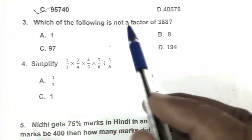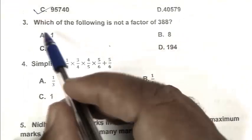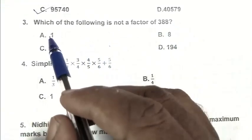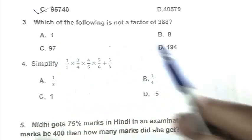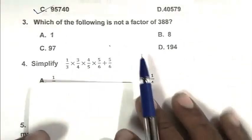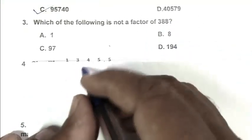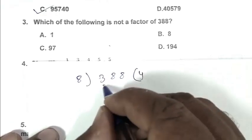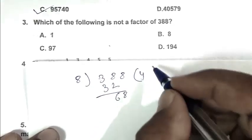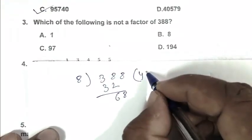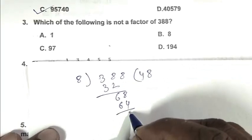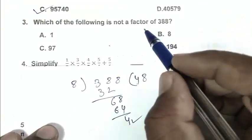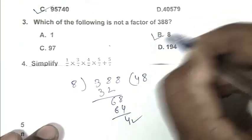Question number 3: Which of the following is not a factor of 388? So friend, first we take option A, that is 1. One is a factor of every number, so it is not the right answer. We take B, that is 8. We divide 388 by 8. Here 4 is the remainder. So the number is not divisible by 8. So 8 is not a factor of 388. B is the right answer.